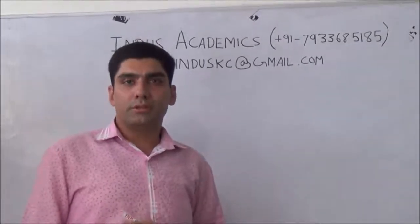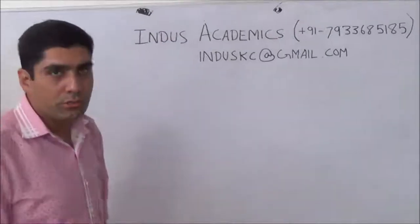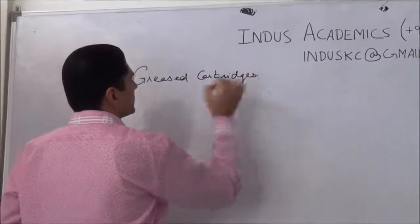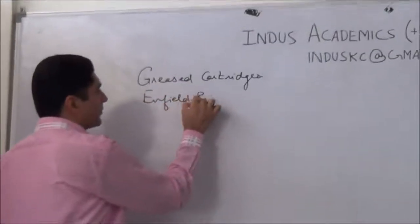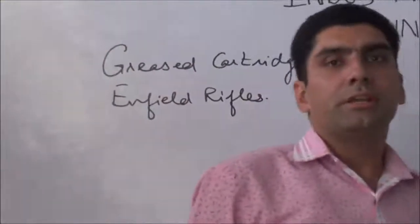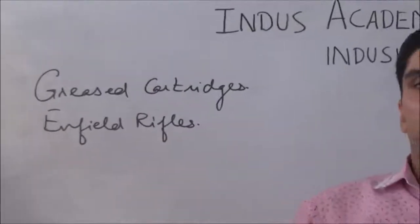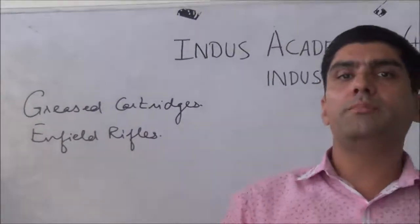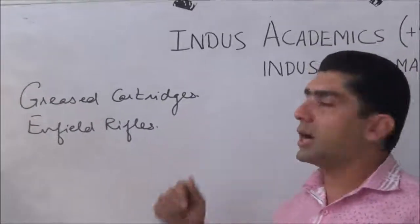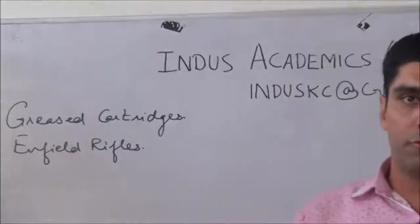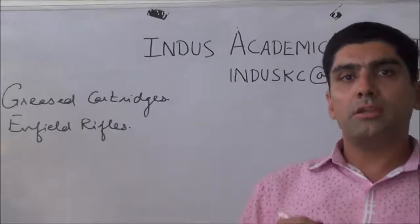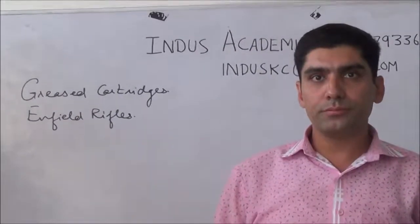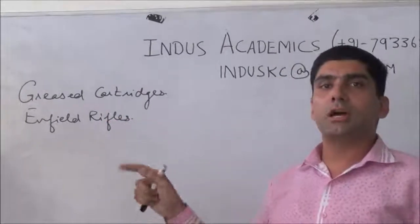The immediate reason for the mutiny was the introduction of greased cartridges for the newly inducted Enfield rifles. These cartridges were coated with grease made from the fats of pork and beef. Before loading these cartridges into the Enfield rifles, soldiers had to bite them off. This was against the religious sentiments of both Hindu and Muslim soldiers serving in the British Army, making it the immediate cause behind the outbreak of the 1857 Mutiny.